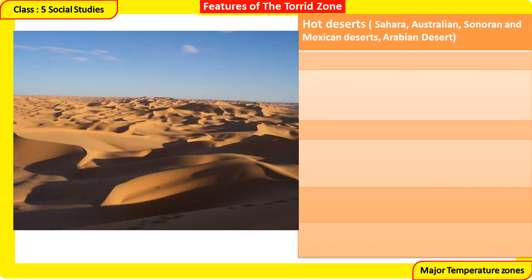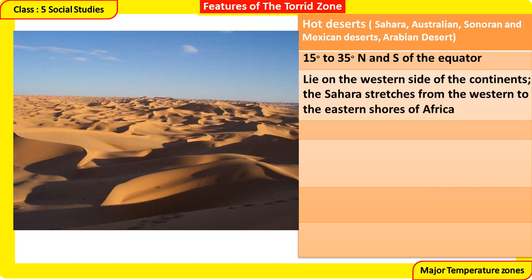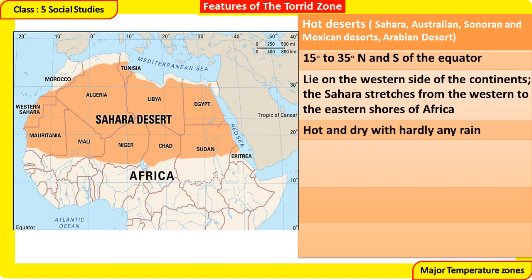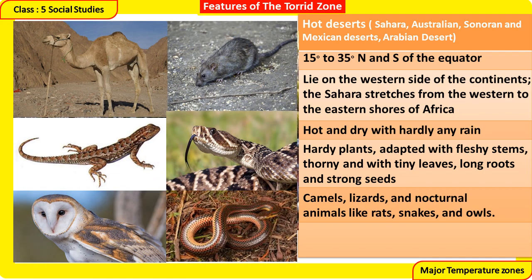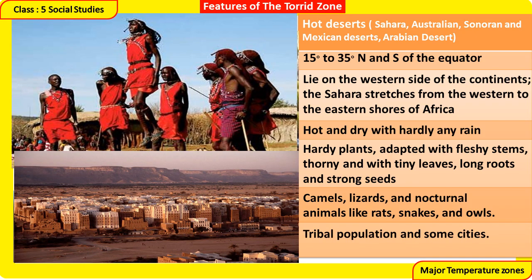Hot Deserts — including the Sahara, Australian, Sonoran, Mexican, and Arabian Deserts — lie between 15 and 35 degrees north and south of the Equator, mostly on the western side of the continents. The Sahara stretches from the western to the eastern shores of Africa. The climate is hot and dry with hardly any rain. Plants are hardy, with fleshy stems, thorny with tiny leaves, long roots, and strong seeds. Animals include camels, lizards, and nocturnal animals like rats, snakes, and owls. The population is mainly tribal with some cities.